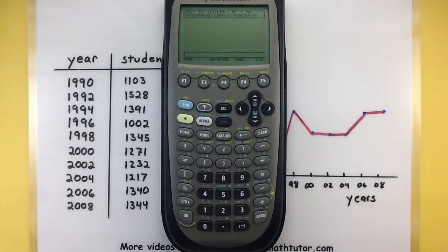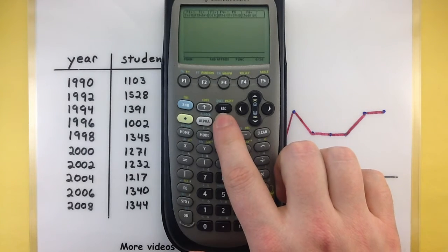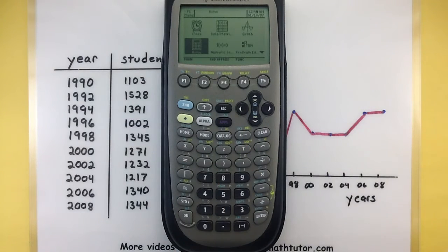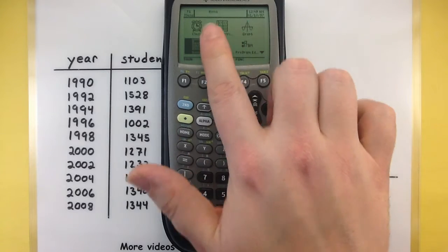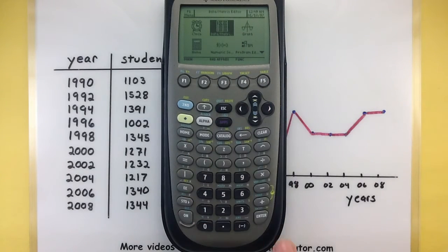The first part is we need to take the raw data and put it into our calculators. I'm on the home screen right now, but go ahead and press your apps button so we can find our data matrix editor. Looks like it's right there on my calculator, I'm going to select it and press enter.